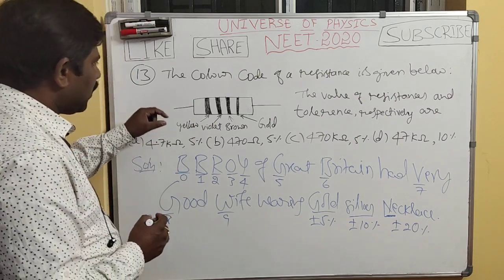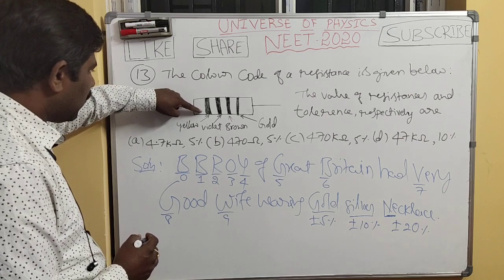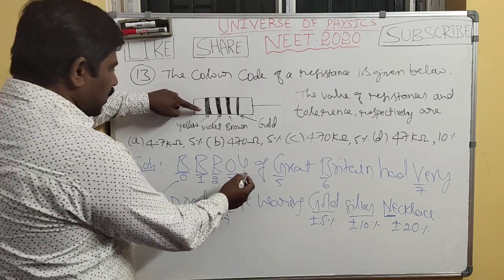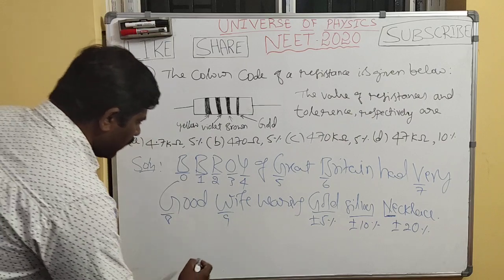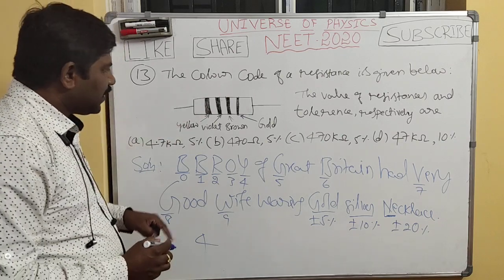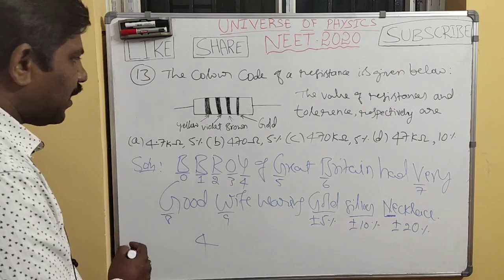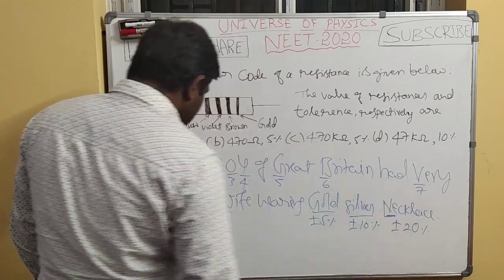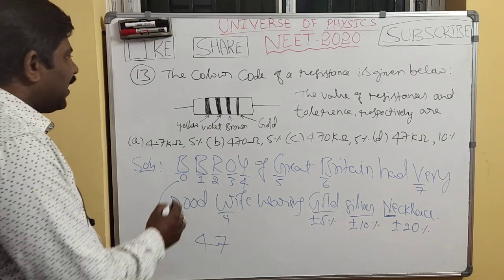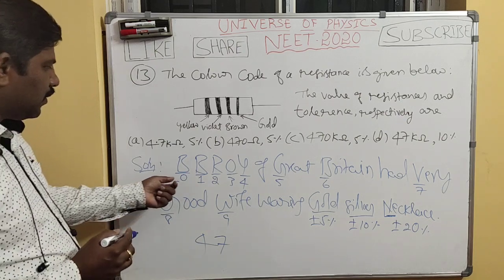Now applying this to our resistor: the first band is yellow, so the first digit is 4. The second band is violet, so the second digit is 7.